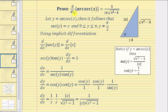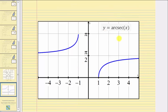The derivative of arc secant x with respect to x equals one divided by the absolute value of x times the square root of the quantity x squared minus one. Notice how this derivative is always going to be positive regardless of whether x is positive or negative, which means the slope of the tangent line is always positive — f of x equals arc secant x is always increasing, or monotonically increasing. Let's verify this graphically. Here's the graph of y equals arc secant x: notice how anywhere the function is differentiable, the slope of the tangent line is positive, and the function is increasing over its entire domain. I hope you found this helpful.